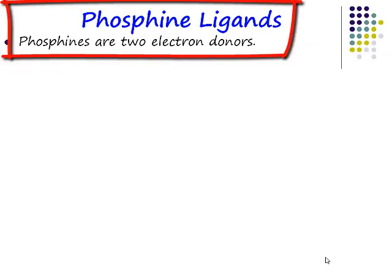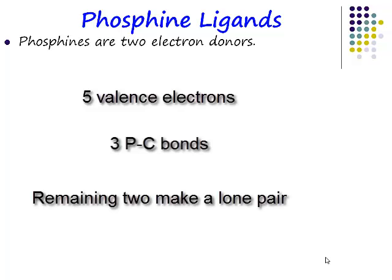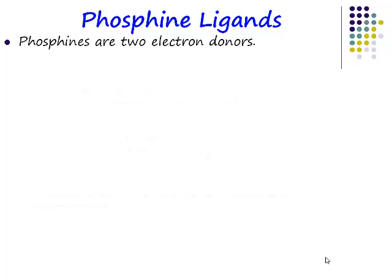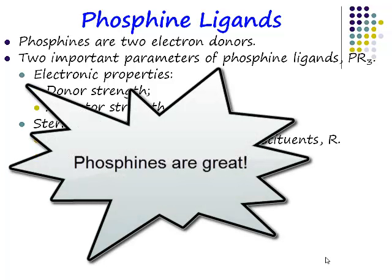Phosphines are two-electron donors. Phosphorus is in group 5 of the periodic table and has five valence electrons. Three of those are used to make the phosphorus-carbon bonds of the alkyl ligand. The other two are a lone pair which is available to donate to the transition metal centre. So a phosphine ligand is a two-electron donor.